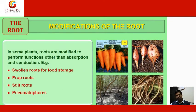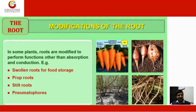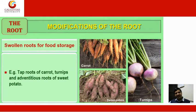Modification of the root: in some plants, roots are modified to perform functions other than absorption and conduction. These include swollen roots for food storage, prop roots, stilt roots, and pneumatophores. For food storage, examples are the tap root of carrot and turnip, and adventitious roots of sweet potato.